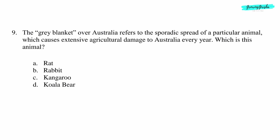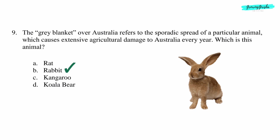Question 9: The gray blanket over Australia refers to the sporadic spread of a particular animal which causes extensive agricultural damage to Australia every year. Which is this animal? Option B: Rabbit.